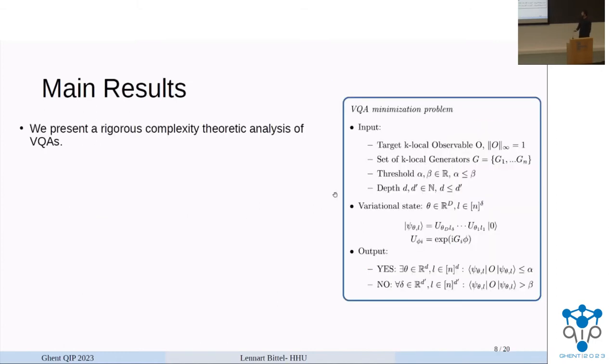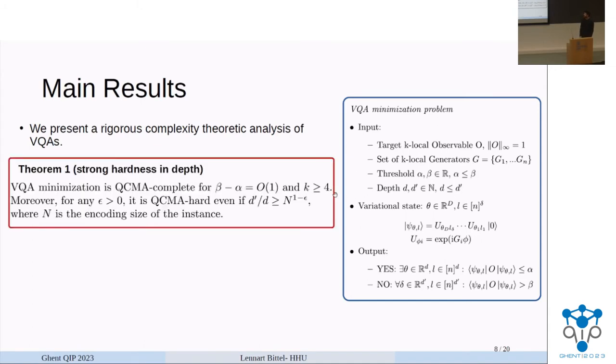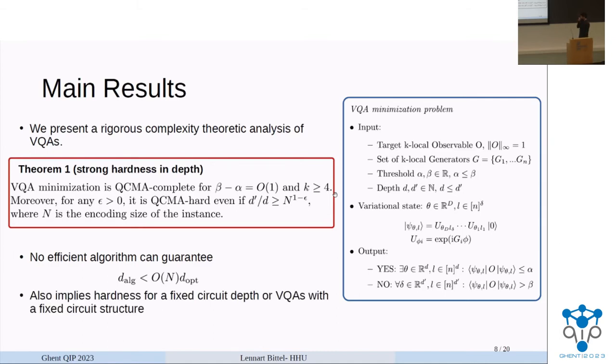So the main results we have is in this paper we can give a rigorous complexity theoretic analysis. Then theorem 1, which shows a strong hardness in the circuit depth. So we show that even with a fixed constant promise gap in the expectation value, we have to make four local observables, that the problem is QCMA hard even if we make the promise ratio with respect to the depth scale with the encoding size of the instance. So what this means is that effectively no algorithm that has guaranteed polynomial runtime can guarantee that it has a circuit depth which is anywhere near the optimal value. These results also apply hardness for other structures and later on I will also mention the QAOA instances.